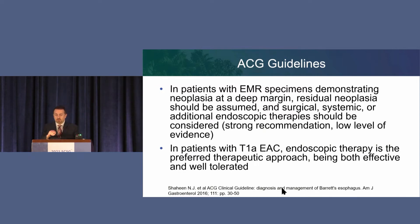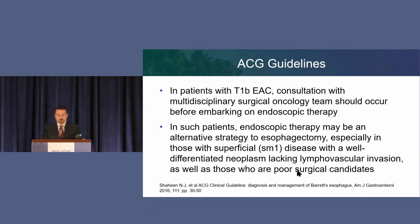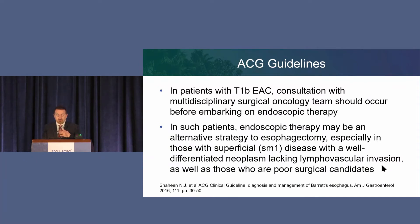If a patient has T1A disease — mucosal, very early — then endoscopic therapy is the preferred therapeutic approach. Even if you have a superficial carcinoma in situ, that is not a patient you send to surgery; you proceed with endoscopy. If it's T1B, deep into the submucosa, then it should really be a multidisciplinary approach: your oncologist, surgeon, and interventional endoscopist hash it out. In some patients, endoscopic therapy may be an alternative to esophagectomy, especially if it's SM1, well differentiated, no lymphovascular invasion, and they're a poor surgical candidate.